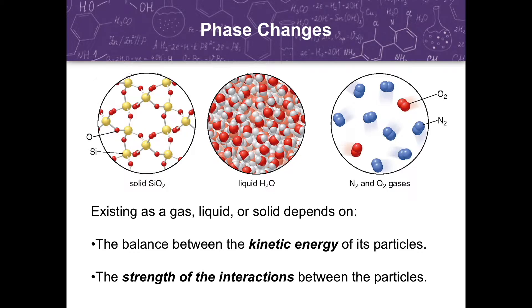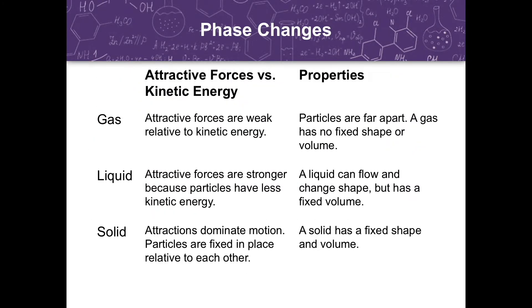Number 1 would be the balance between the kinetic energy of its particles. And number 2, the strength of the interaction between the particles. Here is the comparison of the attractive forces versus kinetic energy and the properties of the different phases of matter.